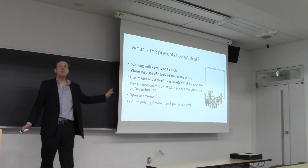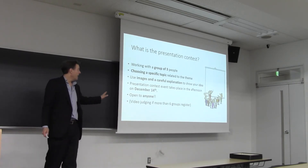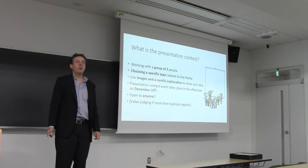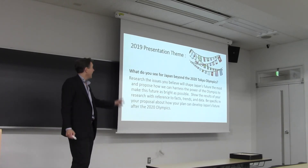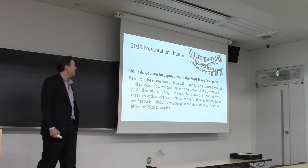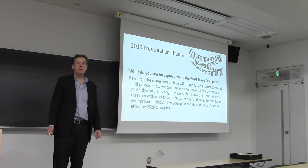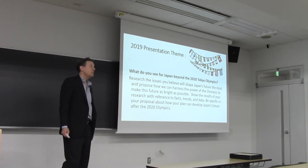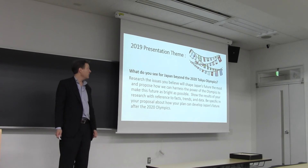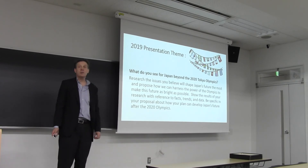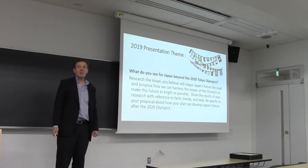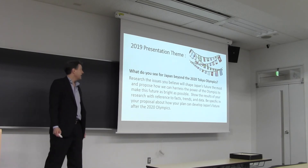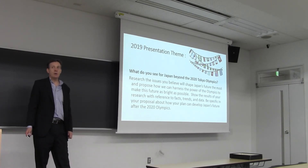If there are more than six groups total that register, then there will be video judging before December 14th. The topic is: what do you see for Japan beyond the 2020 Tokyo Olympics? Research the issues you believe will shape Japan's future the most, and propose how we can harness the power of the Olympics to make this future as bright as possible. Show the results of your research with references to facts, trends, and data. Be specific in your proposal about how your plan can develop Japan's future after the 2020 Olympics.